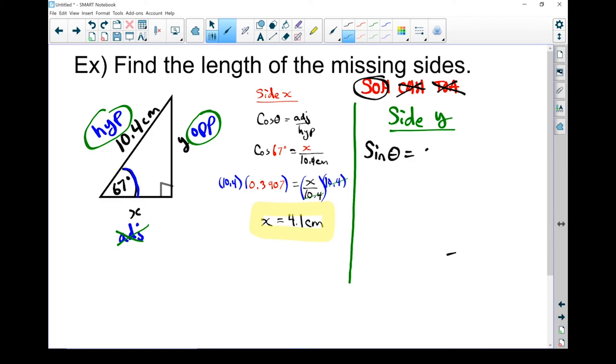Sine of theta equals opposite over hypotenuse. Fit in what we know. Sine. And instead of theta, I'm going to put my 67 degrees. Equals my opposite side. And that's my Y. That's what I'm trying to figure out. Over my hypotenuse. Which, once again, is 10.4 centimeters.